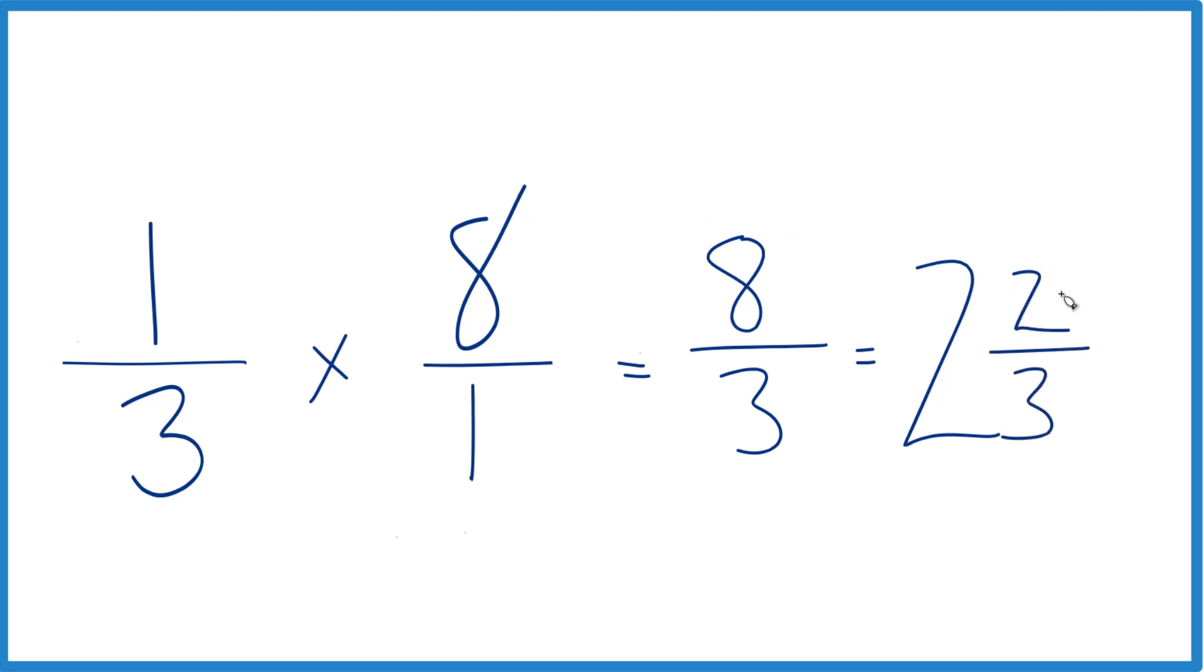We get two and two-thirds. You can check that, two times three is six, six plus two is eight, that's where we get our eight at, and the three just stays the same.